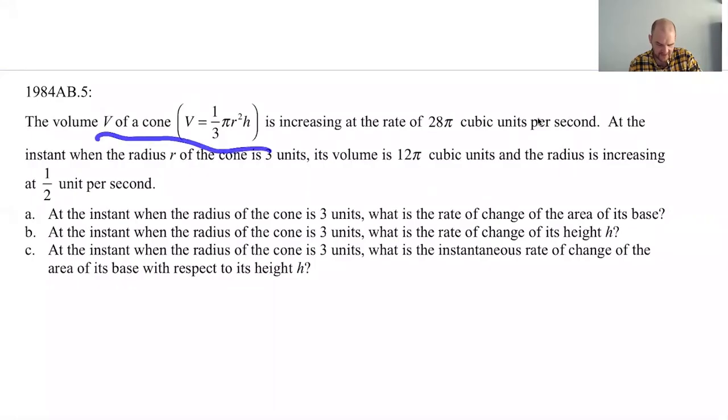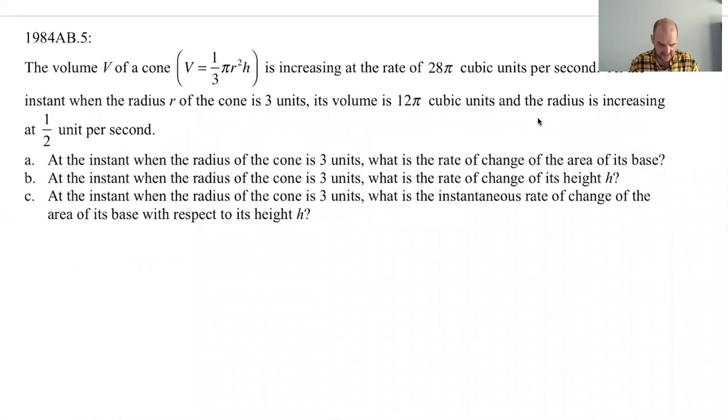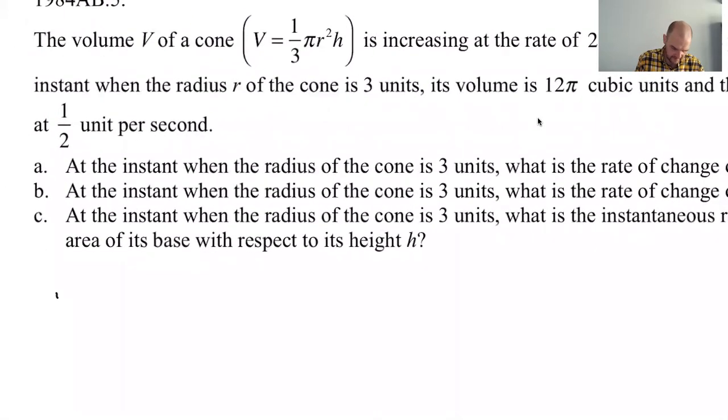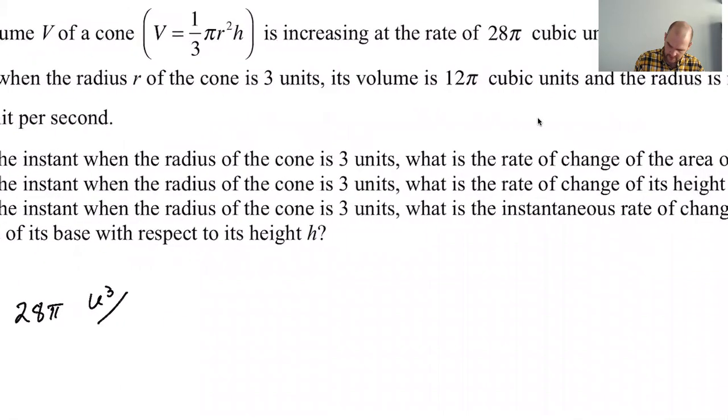So the volume V of a cone, I don't know why they give you the volume formula, but they always do, is increasing at a rate of 28 pi cubic units per second. So that's dV/dt. So I'm going to write that down. dV/dt is 28 pi cubic units per second. I guess I didn't want to commit to centimeters or something.